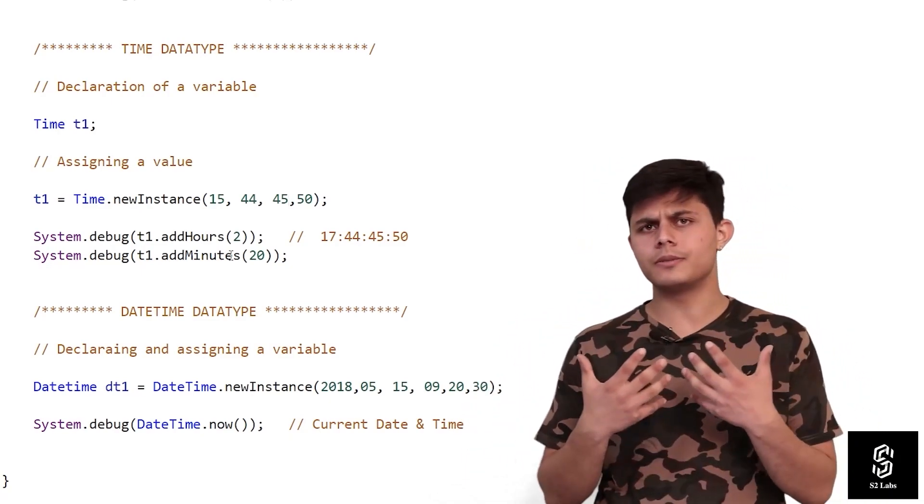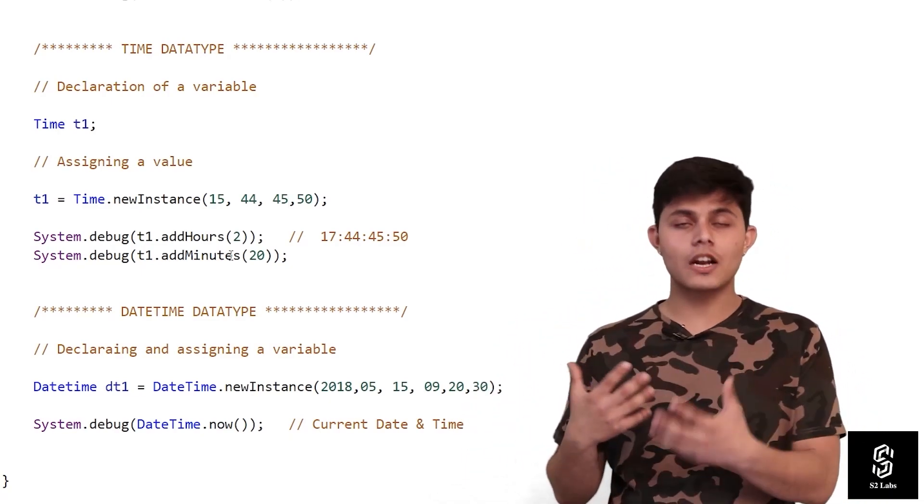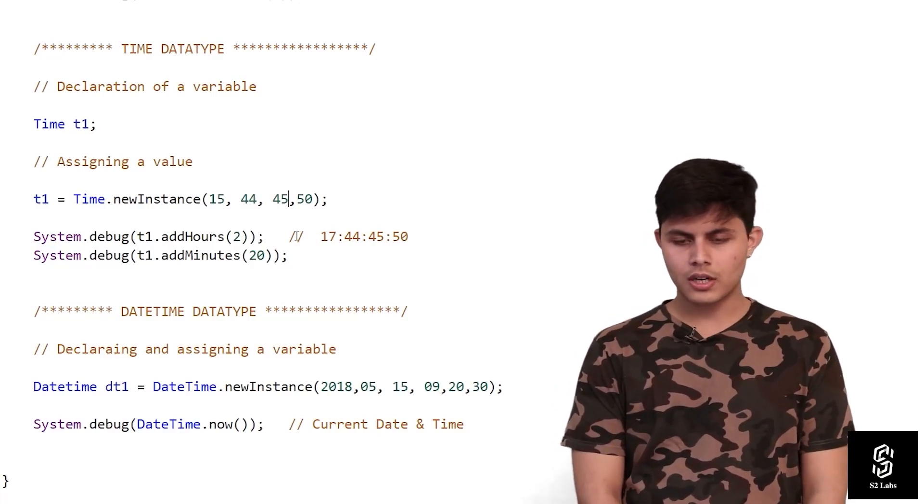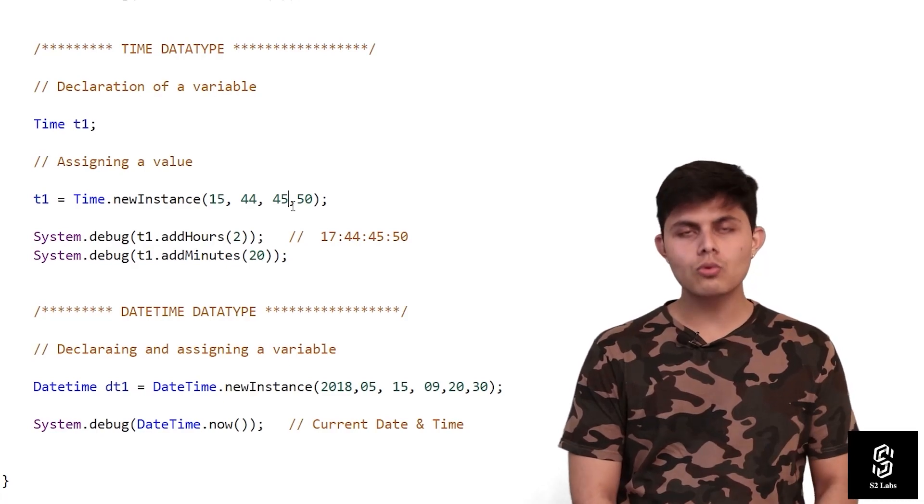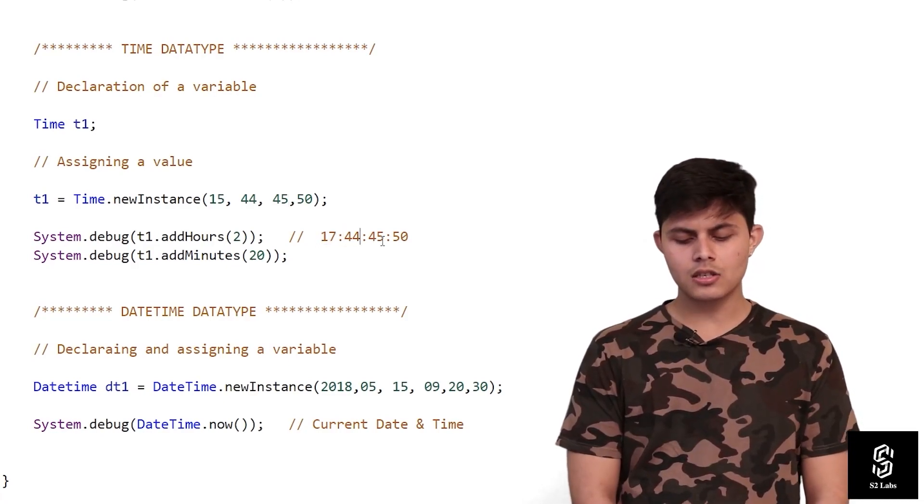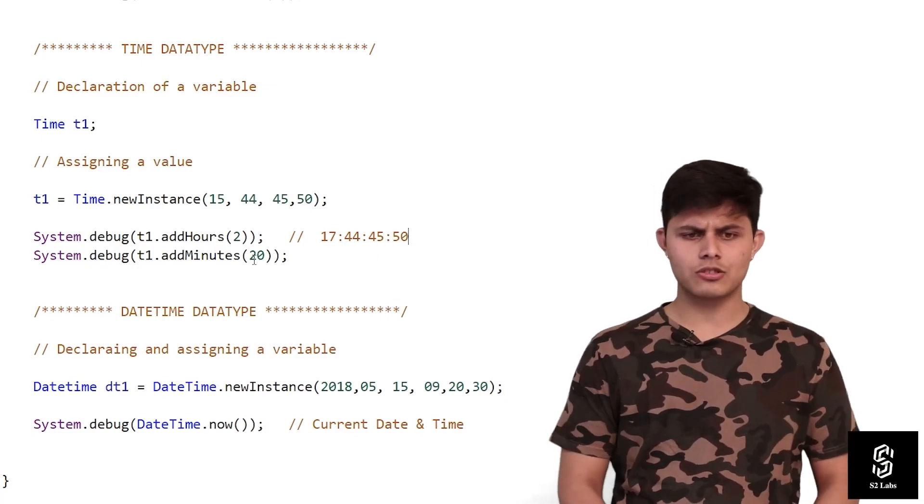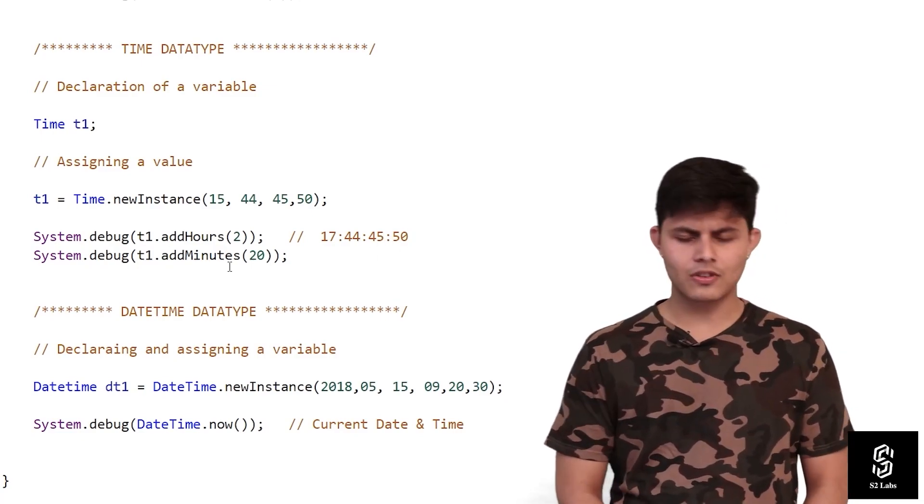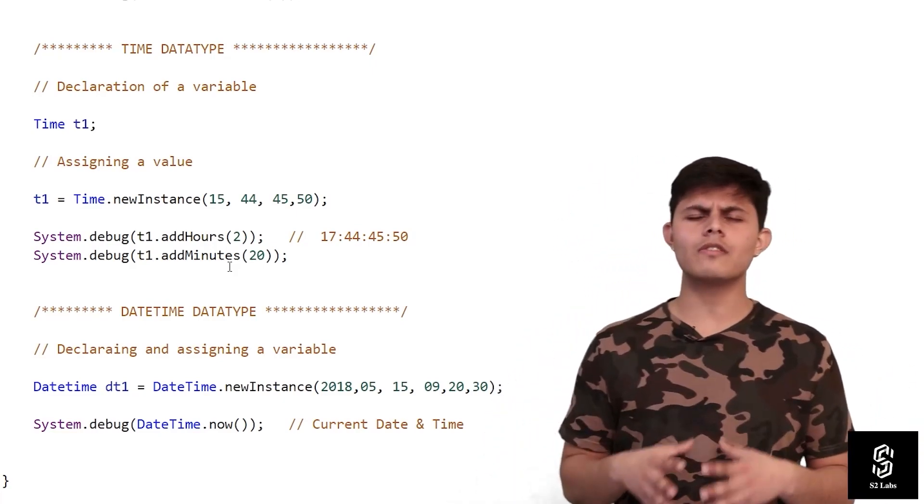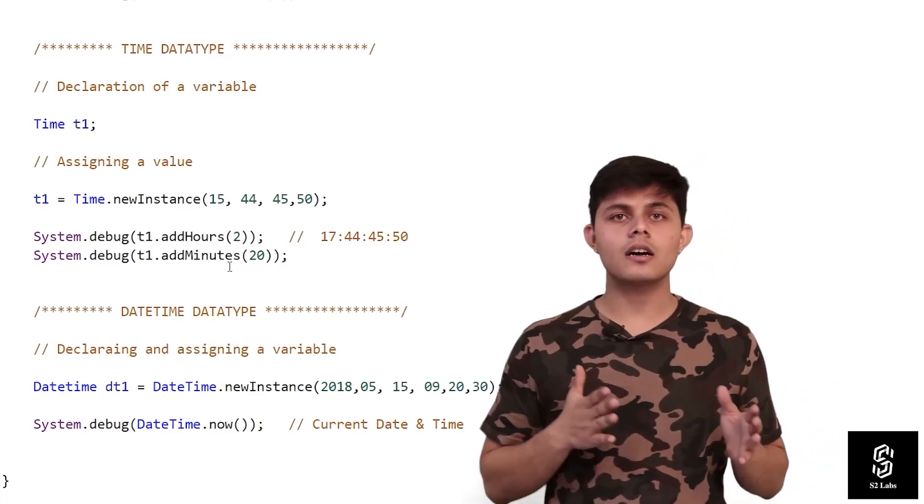With the Time data type, we can use different methods available in Apex. For example, t1.addHours(2) adds two hours to this particular time, making it 17 hours, 44 minutes, 45 seconds, and 50 milliseconds. Similarly, we have addMinutes(), addSeconds(), addMilliseconds(), and other methods we can use with the Time data type.